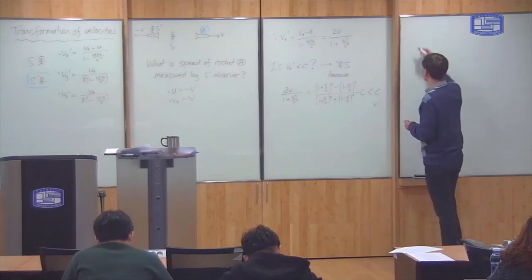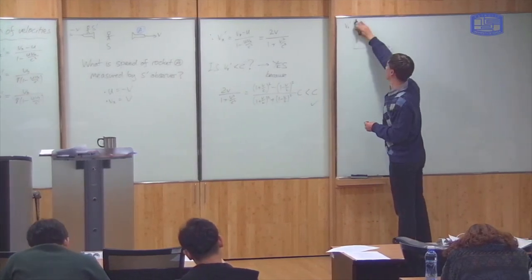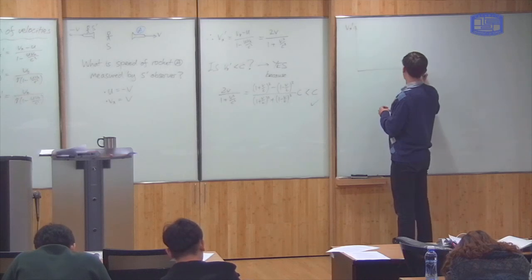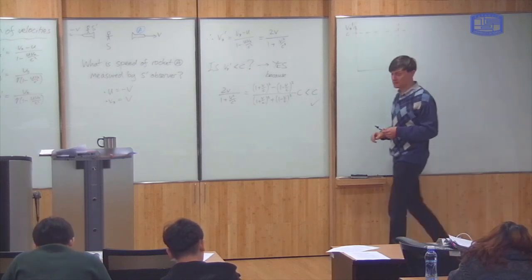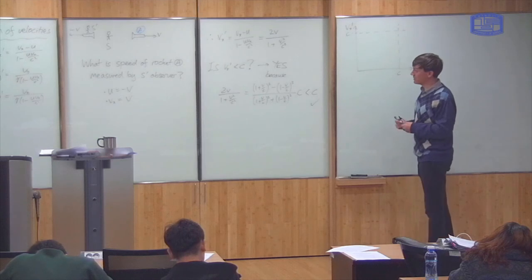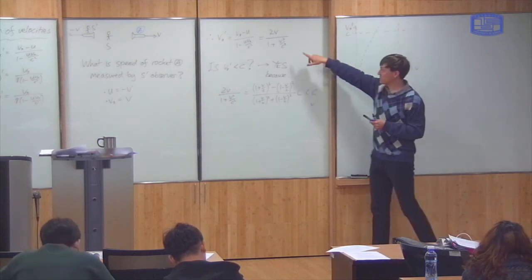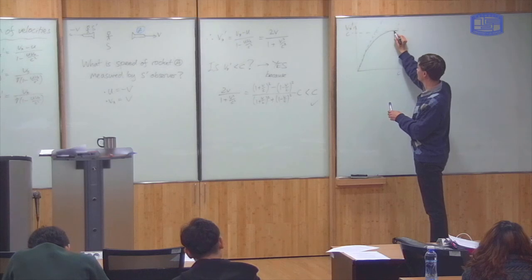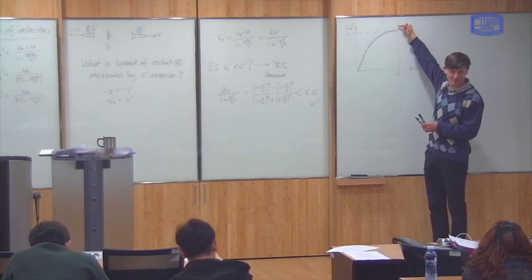You can plot a graph of Vx prime as a function of V. The maximum speed is c. For small velocities, the Galilean transformation is approximately correct and gives 2V — a straight line. But plotting the relativistic formula, it follows that line for small velocities then curves off, approaching but never reaching c. In other words, you can never go faster than the speed of light.